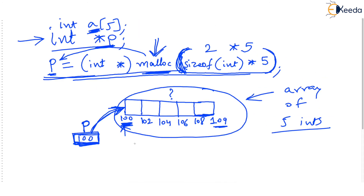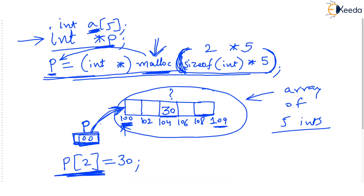Coming back to our previous example: what if I tell you to store some value like 30 at a location, and you write p[2] = 30? This looks like our usual array notation. You might say: p is not an array, p is a pointer — check the declaration — so how can you write it as an array? But even if p were declared as an array, it would mean the same thing, because the name of the array itself is the base address of the array.